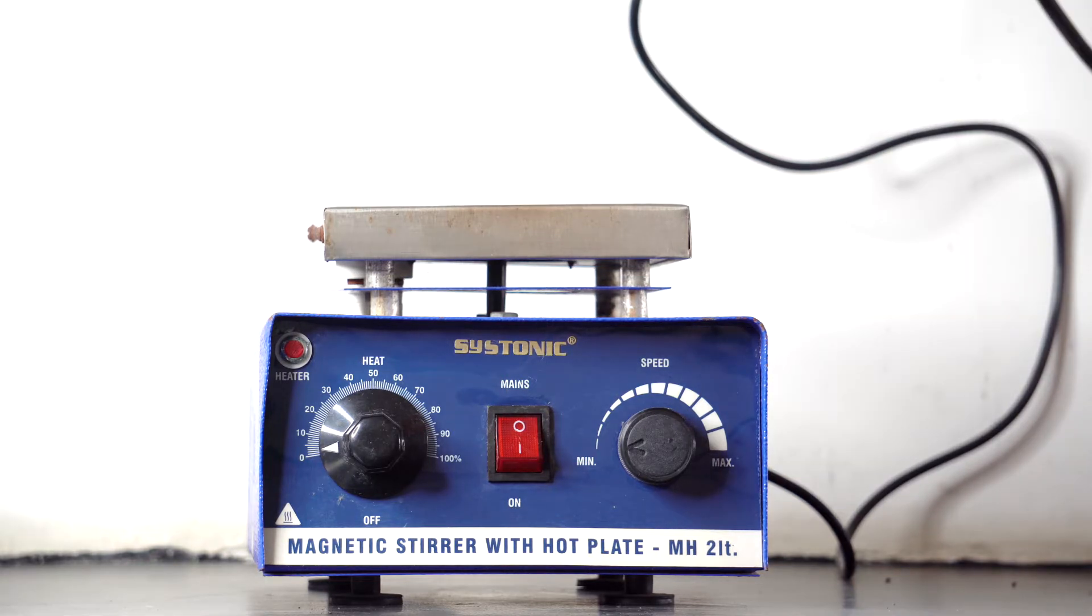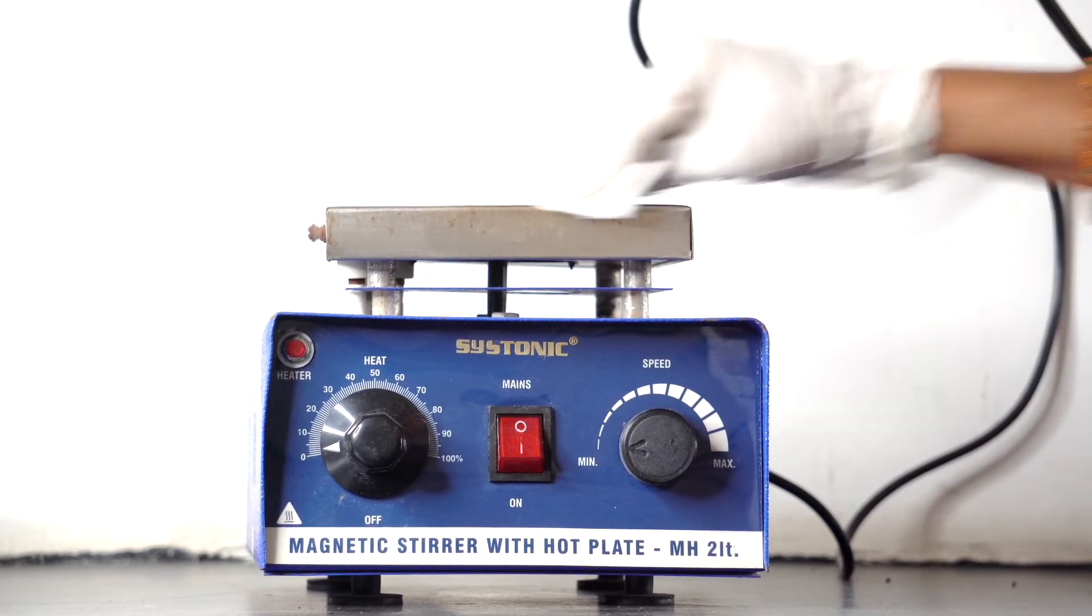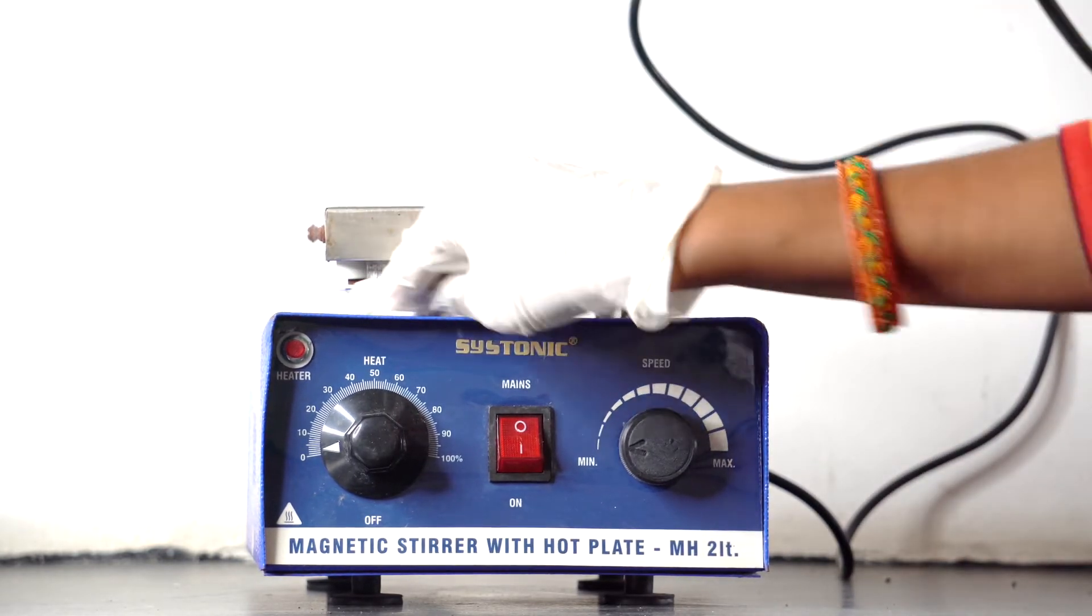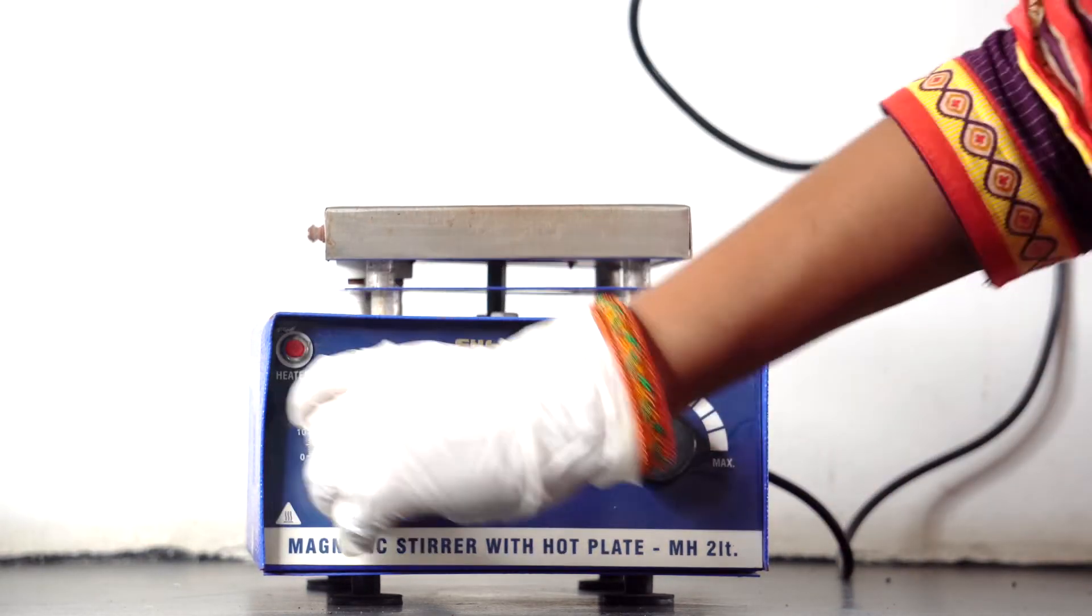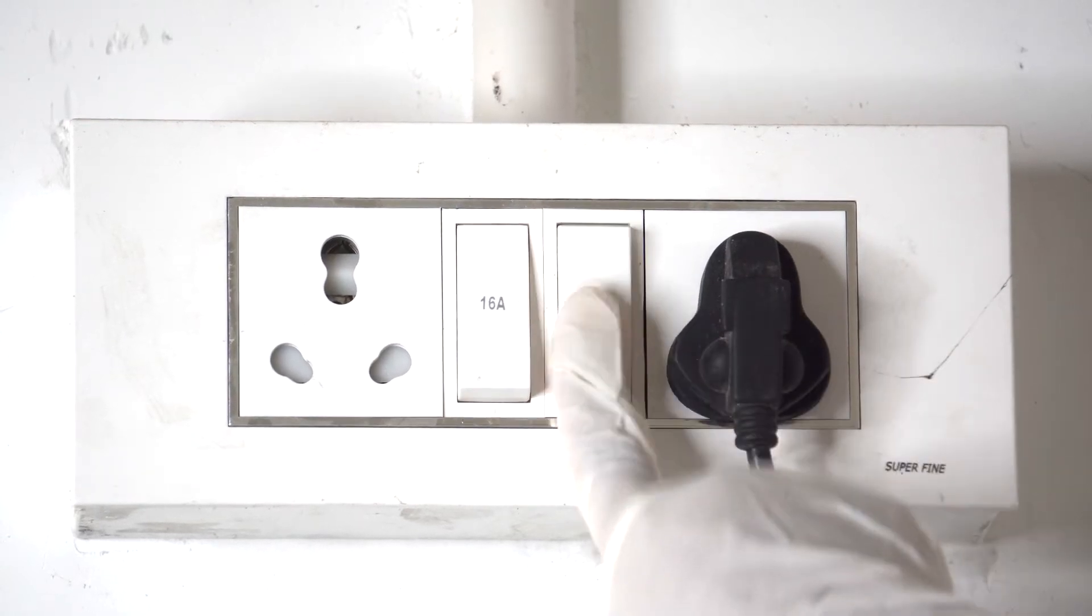Before we begin operation or calibration of the hot plate, we must ensure that the instrument is clean and suitable for use. If not, then clean all parts of the instrument with a clean, dry cloth or tissue paper. After cleaning, switch on the main power supply of the instrument.